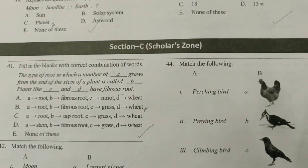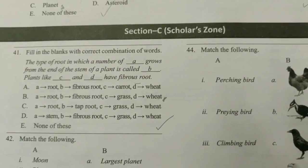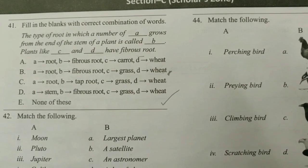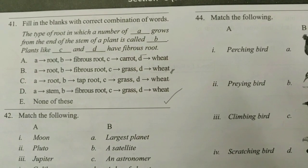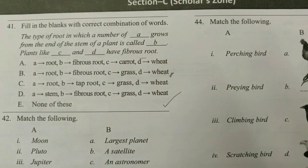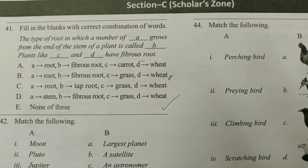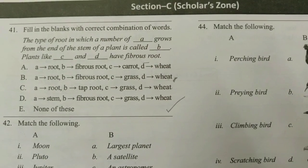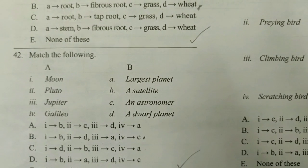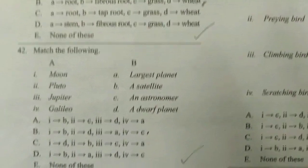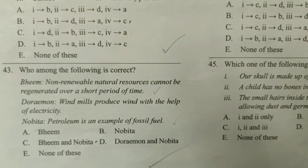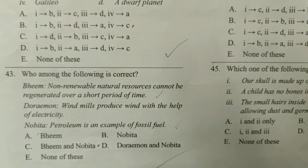Moving on to Section C, the Scholar Zone. Question 41: Fill in the blanks — the type of roots in which a number of roots grow from the base of the stem is called fibrous roots. Plants like grass and wheat have fibrous roots — the answer is B, from Chapter 3. Question 42: Match the following — the answer is B, from Chapter 9. Question 43: Who among the following is correct? The answer is C, from Chapter 8.